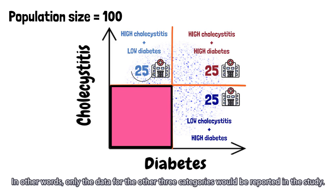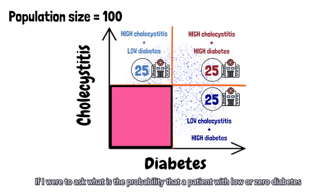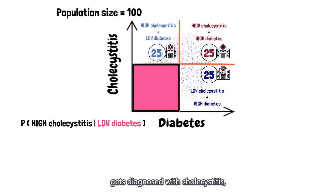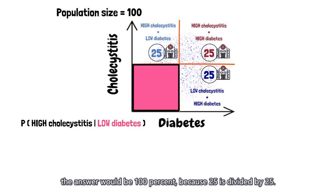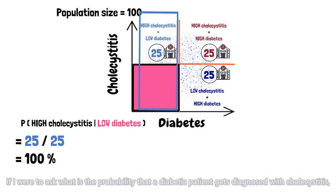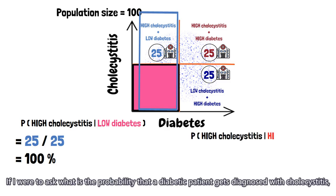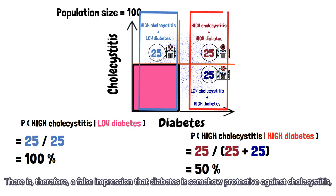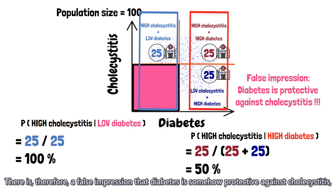In other words, only the data for the other three categories would be reported in the study. If I were to ask what is the probability that a patient with low or zero diabetes gets diagnosed with cholecystitis, the answer would be 100%, because 25 is divided by 25. If I were to ask what is the probability that a diabetic patient gets diagnosed with cholecystitis, the answer would now be 50%, because 25 is divided by 50. There is, therefore, a false impression that diabetes is somehow protective against cholecystitis, which is not accurate.